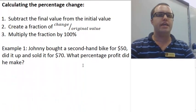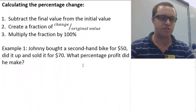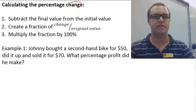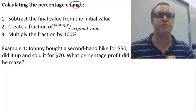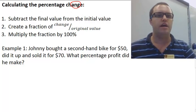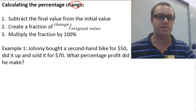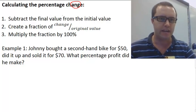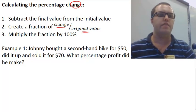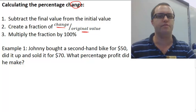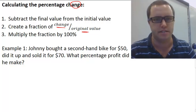So to calculate our percentage change, the key idea here is that they've got a change going on. First we subtract the final value from the initial value, and this will give us an amount that the values have changed. Then you create a fraction of that change over the original value. Then we multiply that fraction by 100%, and that gets us our percentage in the end.